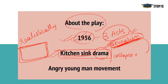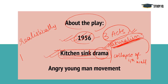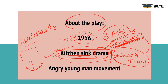This drama is also associated with the collapse of the fourth wall. The collapse of the fourth wall means that these four walls of the house — when drama is set within these four walls — we call it the collapse of the fourth wall. Kitchen sink drama is thus a realist, working-class form of theatre.